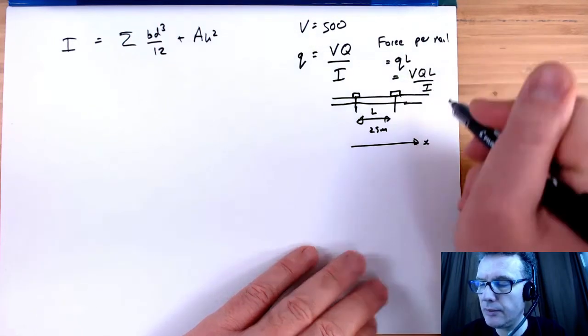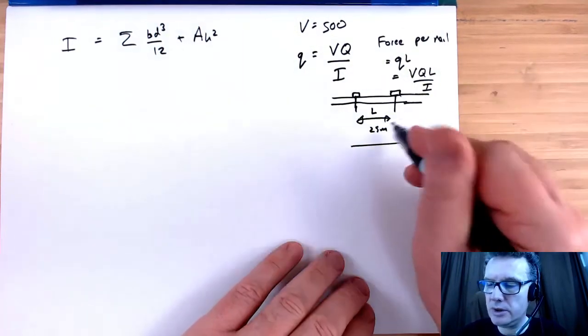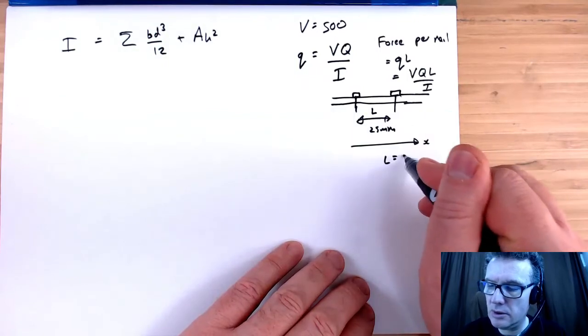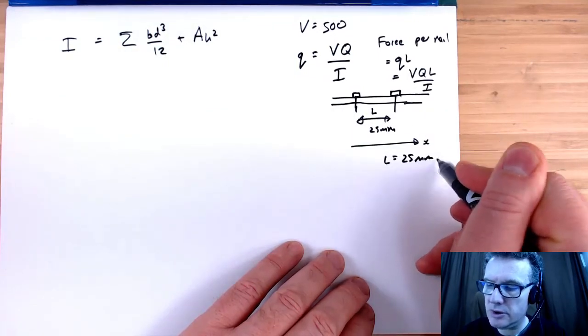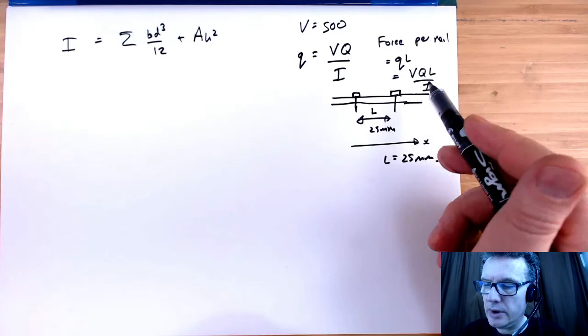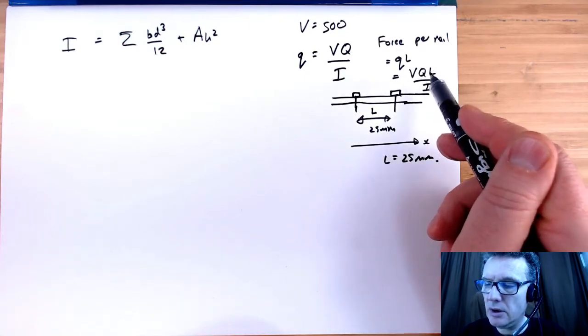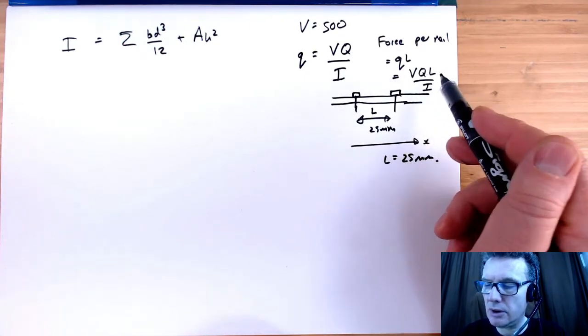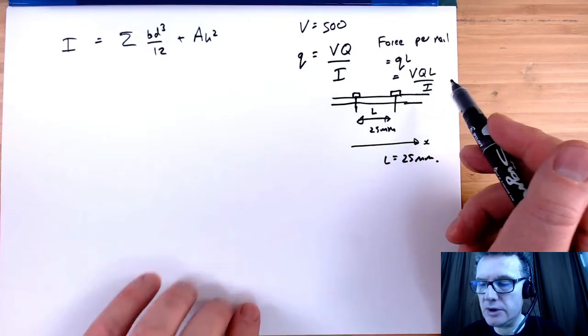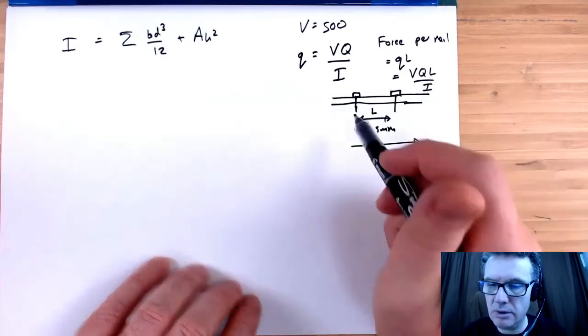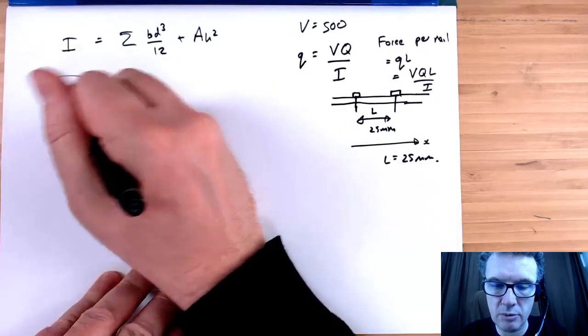Well, L is 25 millimeters. So I know V, Q, L won't be difficult to work out, but the difficult thing is the I. Let me sketch out my beam.